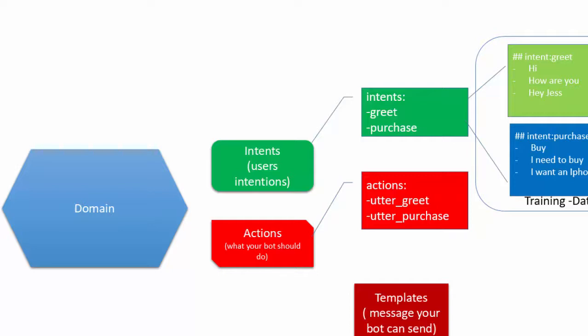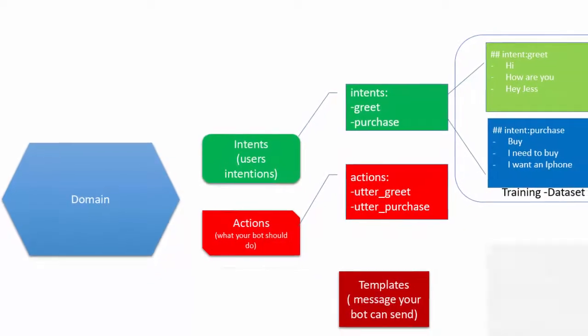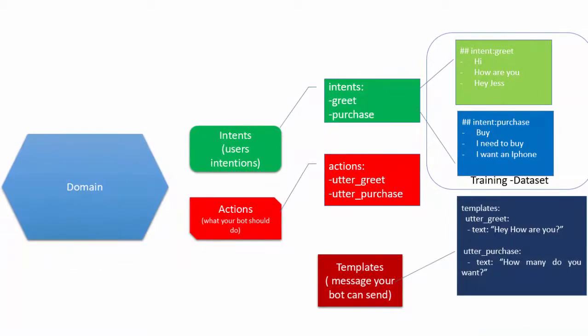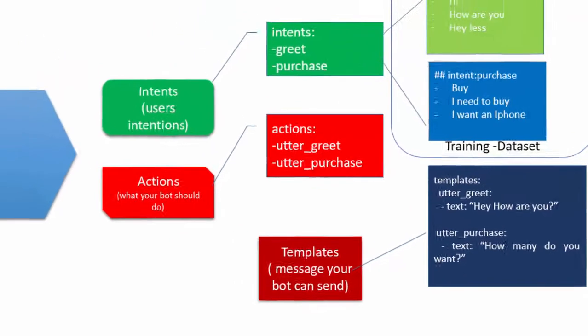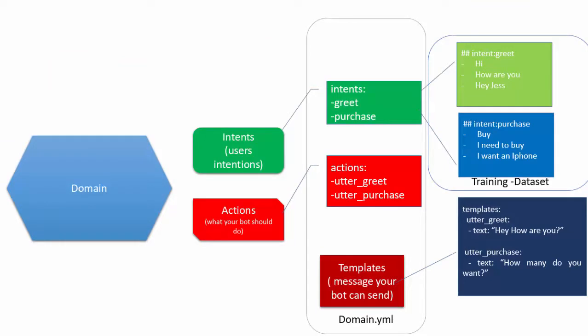The actions have a template — the message the bot can send. So if the user says 'hi', the bot replies 'hey how are you' — that's an action. These are defined as action_greet, action_package, and so on, each with a template. The template for action_greet might say 'hey, how are you?' Our intent, actions, and templates make up the domain YAML file, and the intent alone becomes our training dataset.